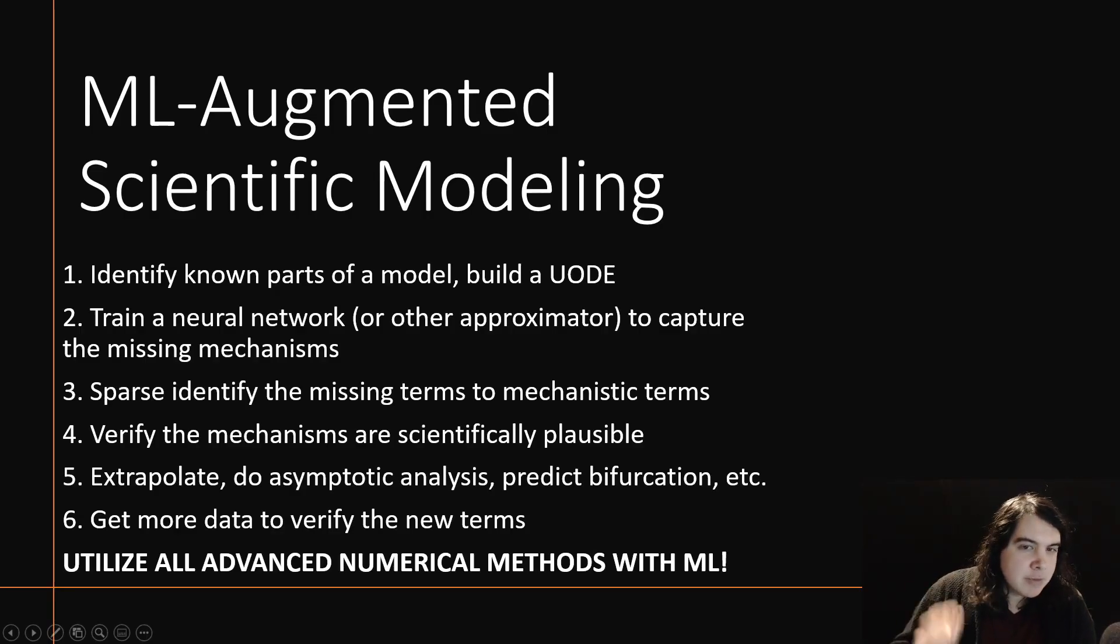This is the machine learning augmented scientific modeling approach, where we build models, we showcase what has uncertainty, we replace those uncertain terms or areas with neural networks, and we use that to be able to recover parts of the model that we didn't know before, and end up with a new data-driven mechanistic model that predicts what mechanisms we should have been putting in there.